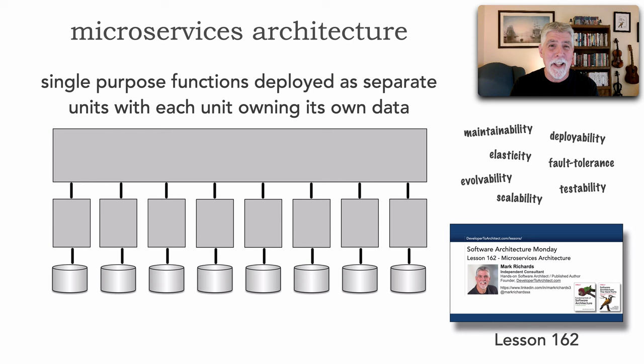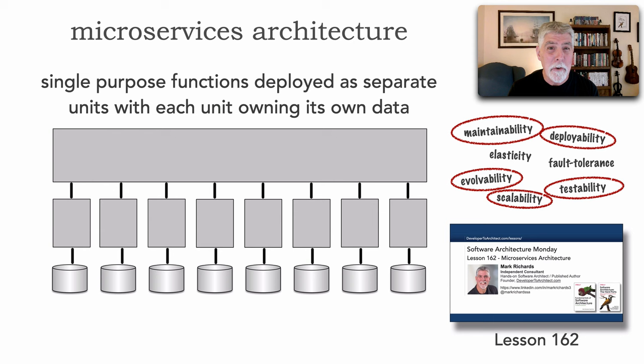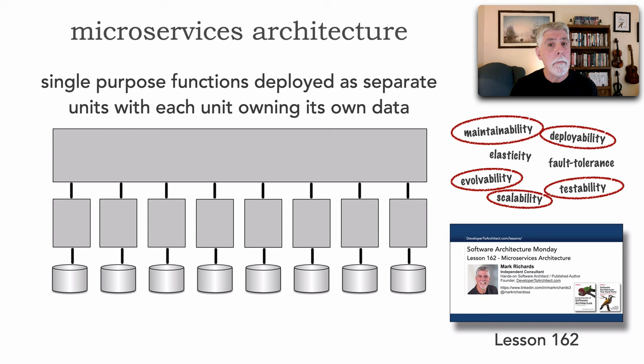We learned in lesson 179 that we need to add a couple more steps onto our selection process. Even though the characteristics match, we have to apply domain-to-architecture isomorphism — making sure that the shape of the candidate architecture style we selected matches the shape of our problem — and then continually measure that to validate the architectural style selection based on changes to business, environment, or technology.